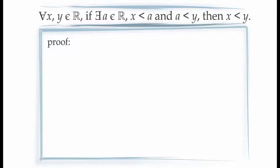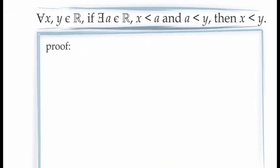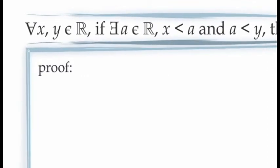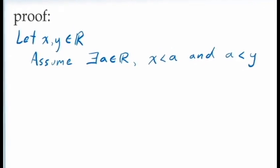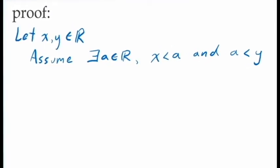Let's prove the statement: for all x and y in the real numbers, if there is at least one value of a in the real numbers that is larger than x and also smaller than y, then x must be smaller than y. This statement seems obvious, but let's have a look at how we can prove it. To begin, since this is a statement about all real numbers x and y, we need to start by introducing arbitrary constants x and y into our proof. Since we have a conditional statement, we assume the antecedent, which is: there is at least one value of a in the real numbers for which x is less than a and a is less than y. You'll notice that this assumption includes an existential quantifier, which means we're going to need to use the principle of existential instantiation.